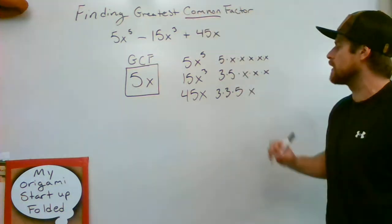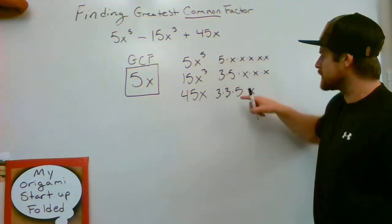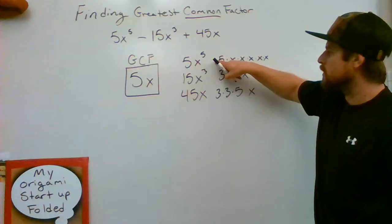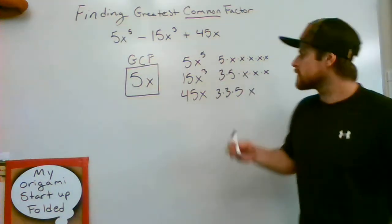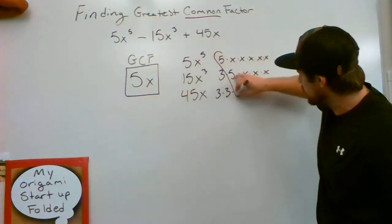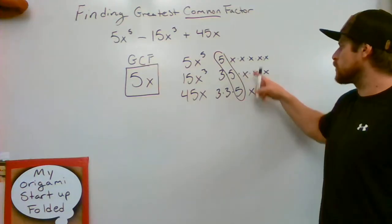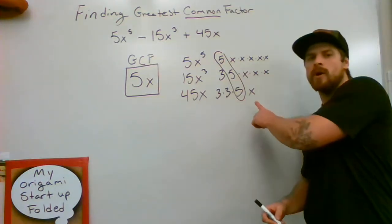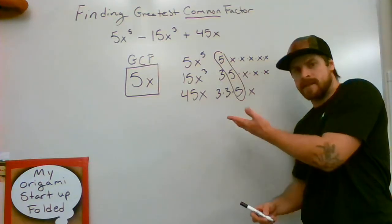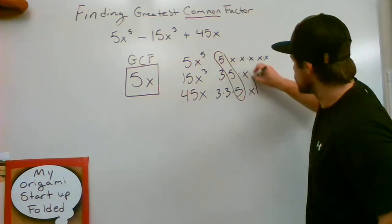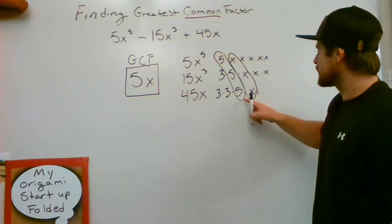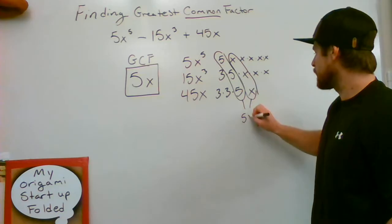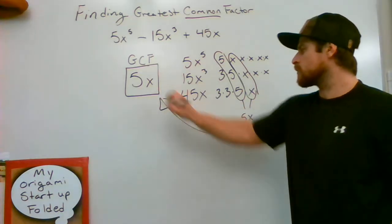So what do I have in common with each one of these? I have a 5 in every single one of them. I have 3's here, but I don't have a 3 to make a 5. So my greatest common factor is 5. And then what do each one of these all have in common? The lowest exponent is a singular x. So that means 5x is my greatest common factor.